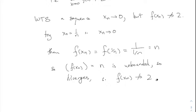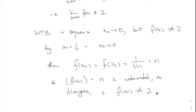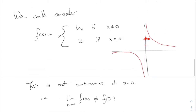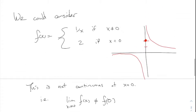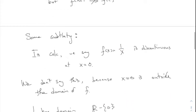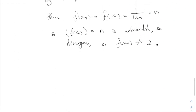Notice the proof never involved the number 2. I just picked 2 arbitrarily. For exactly the same reason, this function would be discontinuous no matter what value you assigned at zero — it's always going to be discontinuous at that point regardless of where you put the extra value.